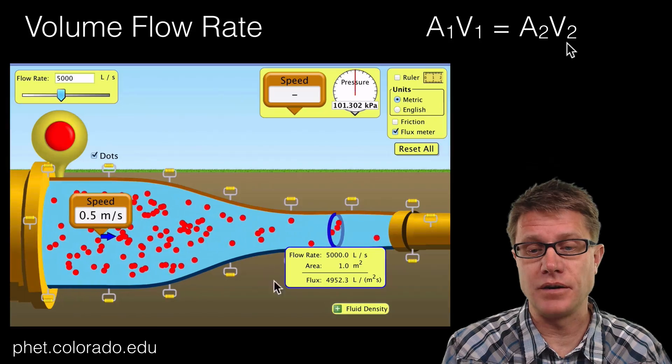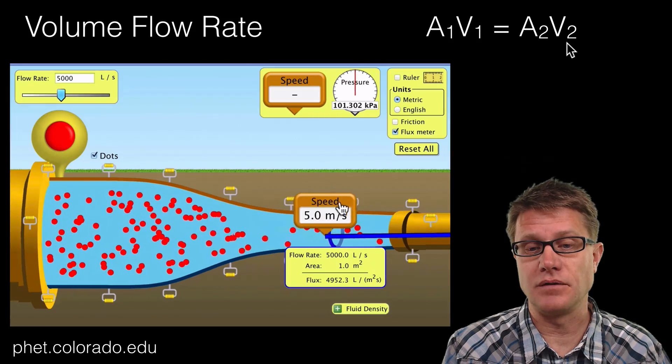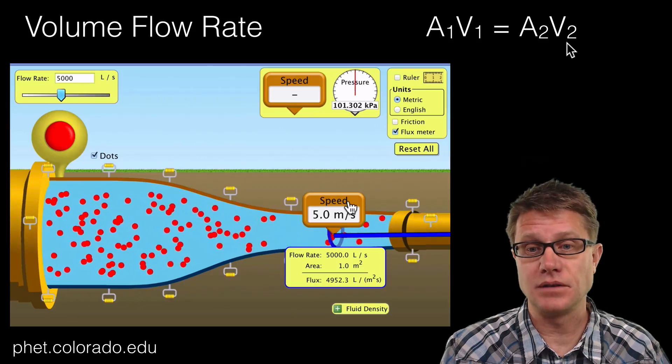What happens if I change the area where the area is now 1 meter squared? We are going to see a velocity of 5. Because 1 times 5 is 5.